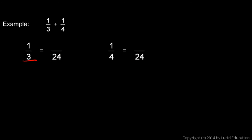So I'll write 1 3rd as an equivalent fraction and 1 4th as an equivalent fraction, both with denominators of 24, because 24 is a multiple of 3 and 24 is a multiple of 4. So here I go. 3 times what is 24? 3 times 8, so I also have to multiply the numerator by 8, and 1 times 8 is 8. So 1 3rd is equal to 8 over 24.